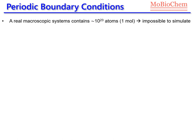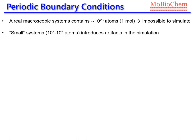A real macroscopic system contains around 10 to the power of 23 atoms, which is nowadays impossible to simulate using classical molecular dynamics. Usually, our standard sizes that we are able to simulate are around 10 to the power of 5 to 10 to the power of 6 atoms. These relatively small systems, in comparison with the reality, introduce artifacts in our simulations.